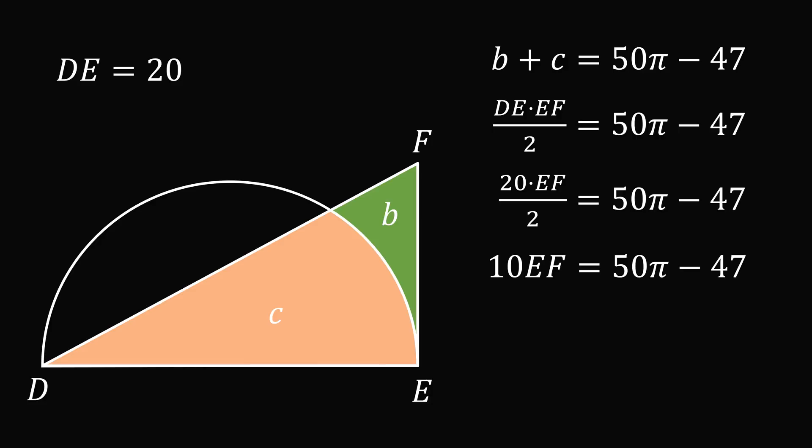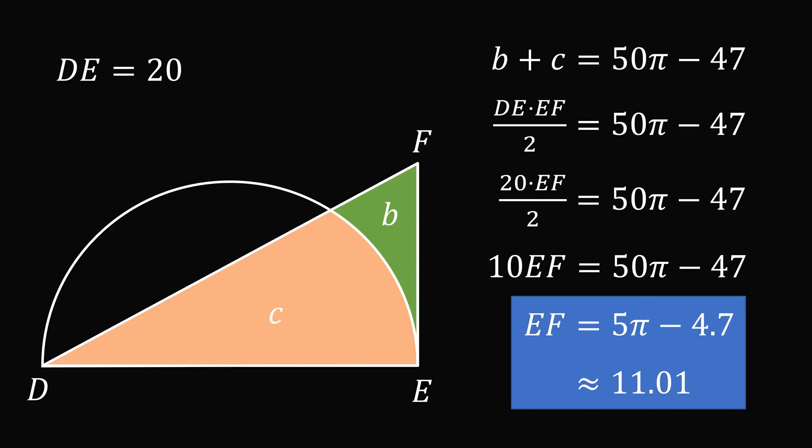Dividing both sides of the equation by 10 gives EF is equal to 5π minus 4.7, which is approximately equal to 11.01. And that's the answer!